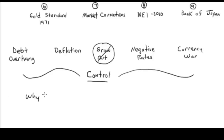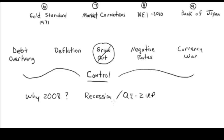Why does 2008 still linger in everybody's mind? My argument is that we never came out of the recession — that all of the quantitative easing and the zero interest rates by the Fed never pulled us out of this recession. Because this recession caused deflation. There has been deflation in our system and this quantitative easing, all this money that the Federal Reserve has been printing.